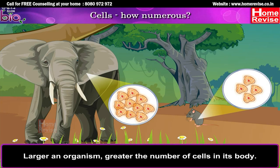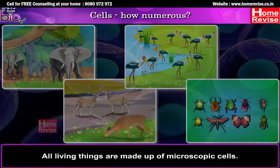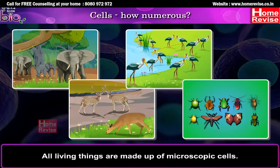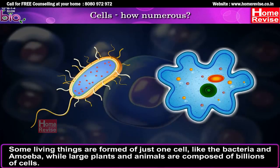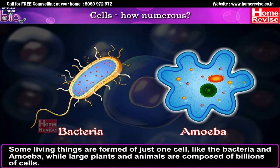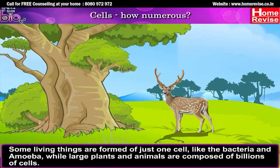All living things are made up of microscopic cells. Some living things are formed of just one cell, like bacteria and amoeba, while large plants and animals are composed of billions of cells.